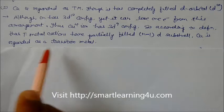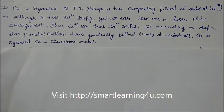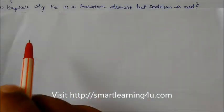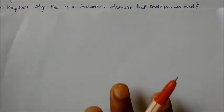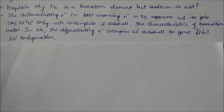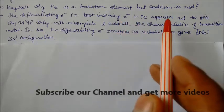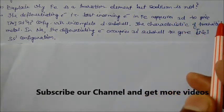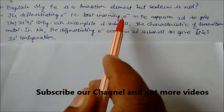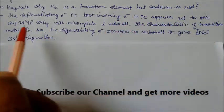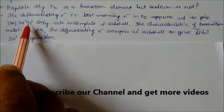According to definition, the transition element cations have partially filled n minus d subshells, so copper is regarded as a transition metal. Explain why iron is a transition element but sodium is not. The differentiating electron, that is the last electron in iron, acquires the 3d to give this configuration. This is the configuration, the last electron after acquiring it gives this configuration 3d6 4s2.